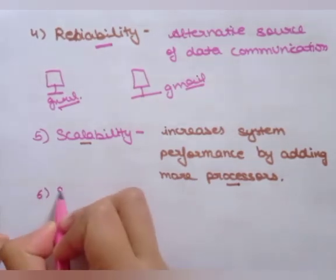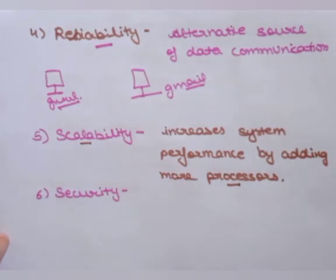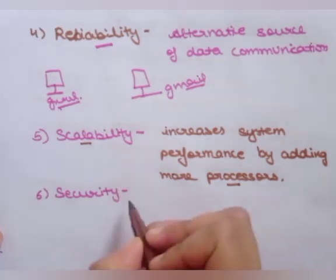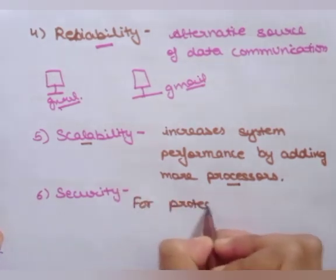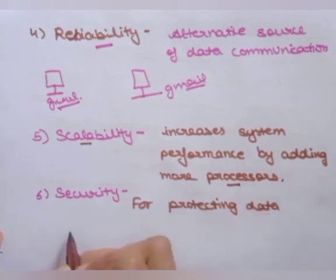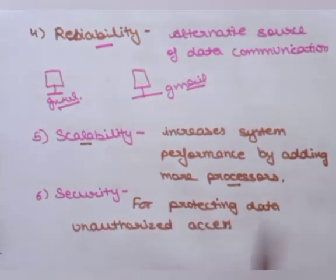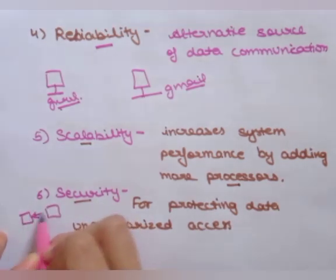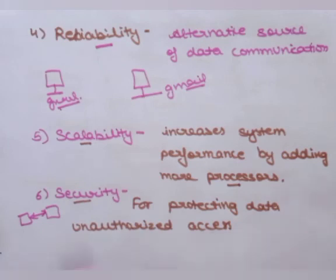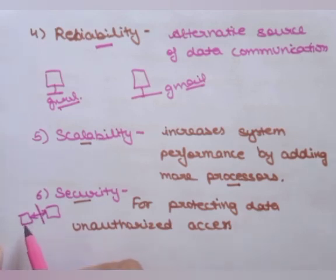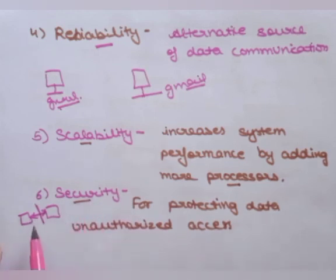The last characteristic is security. This is the main characteristic of computer network, where you can take necessary steps for protecting your data from unauthorized access. This means that if we have two computer systems sharing data, there may be unauthorized users watching and accessing our data. So when we are using a computer network, we have to focus on security.